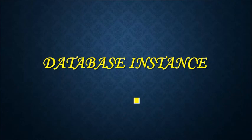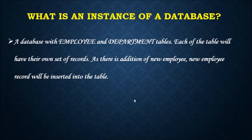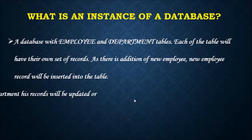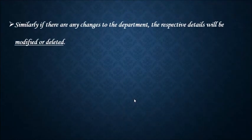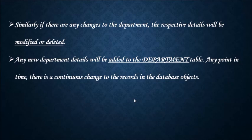Database instance. What is an instance of database? Let's consider a database with employee and department tables. Each of the tables will have their own set of records. As there is addition of new employees, new employee records will be inserted into the table. When the employee moves out from the department, his records will be updated or deleted. Similarly, if there are any changes to the department, the respective details will be modified or deleted. Any new department details will be added to the department table. Over time, there is continuous changes to the records in the database objects.